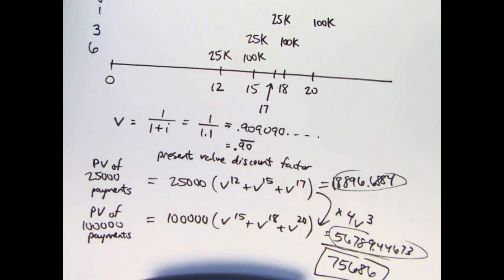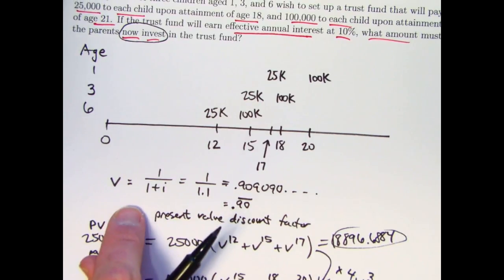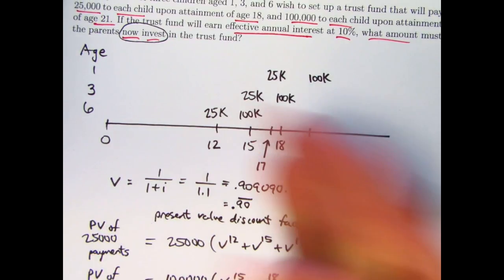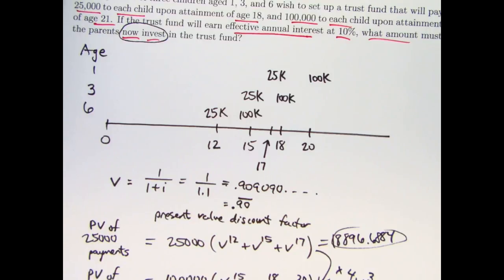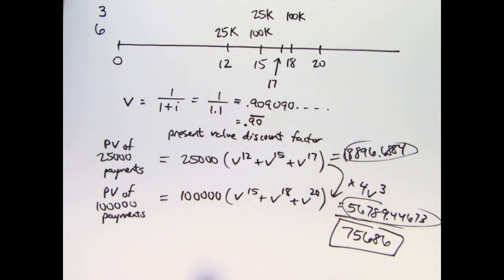And so you should take the time to think over what we did here. And again, especially focus on this idea of a present value discount factor. We pulled these amounts back in time to the present by multiplying by powers of that discount factor. And we also use this problem-solving strategy that made our work a little easier. I'll end this video right there.